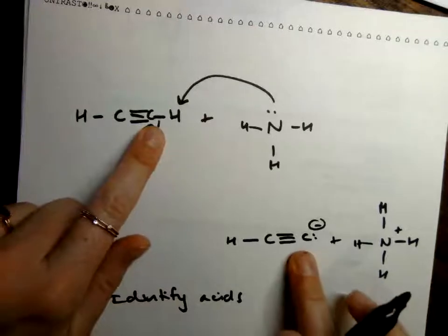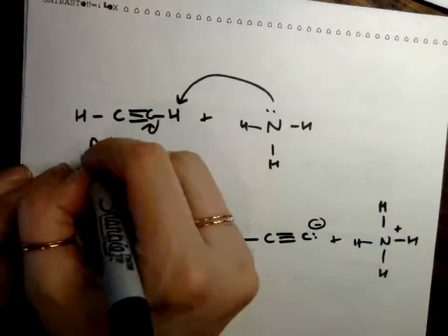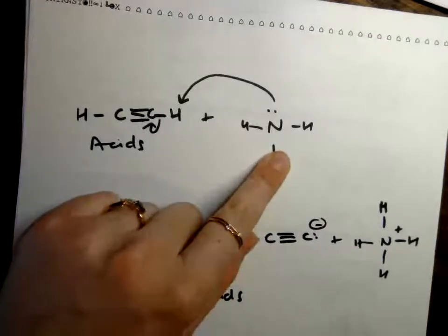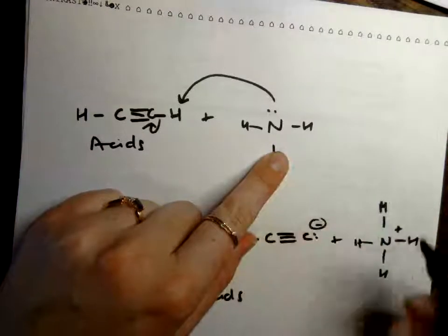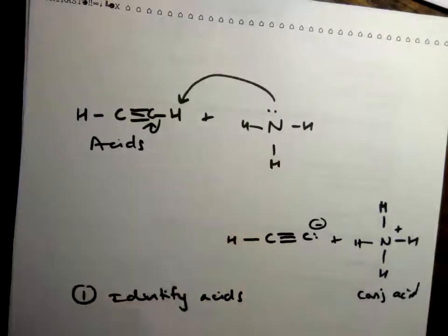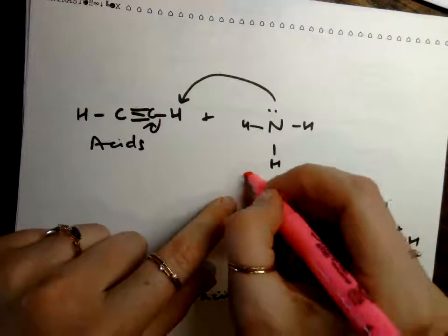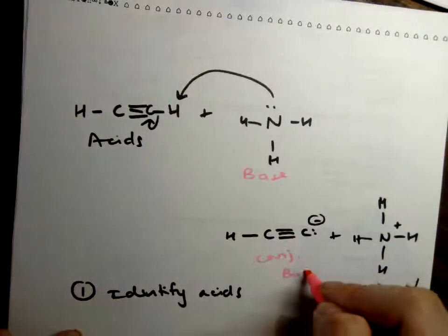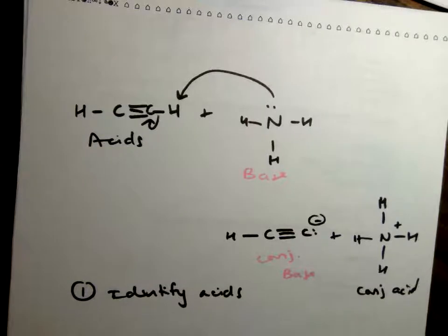So this is the one losing the proton. So this is the acid. That means this is the base. It's gaining a proton, which means base goes to conjugate acid. So this is the conjugate acid. So this is our acid base. And this is our conjugate base. And conjugate acid.